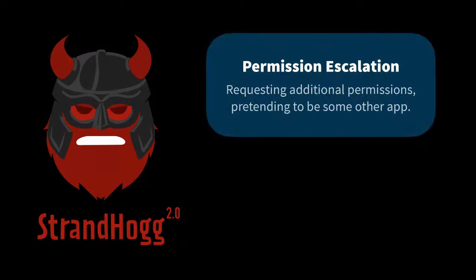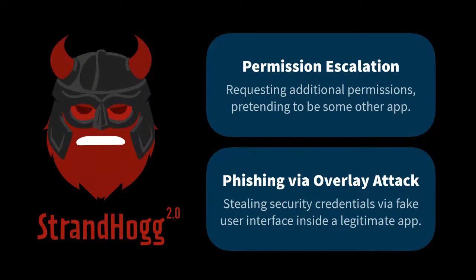What StrandHogg 2.0 allows is, first, permission escalation — the attacker can request additional permissions on behalf of the user, pretending to be another application. The second unpleasant capability is phishing via a very sophisticated and convincing overlay attack. As such, it can steal security credentials, for example to a banking application or any other application, as we will show in our demo.